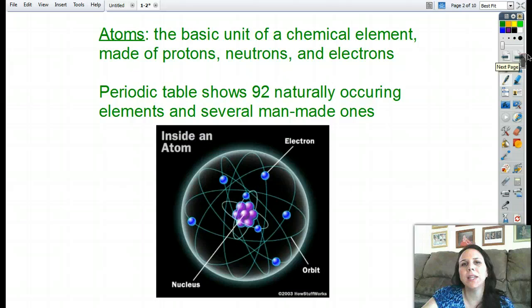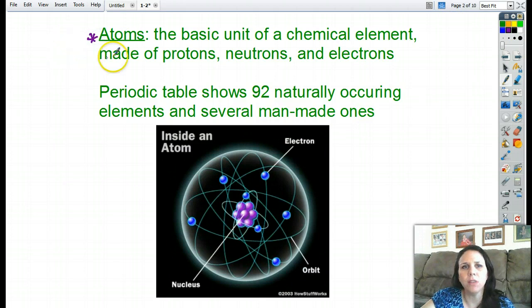So if we break down anything in the world, whether it's alive, or your chair, or the table that you're working at, or the headphones that you're listening to this through, they're all made out of atoms. Atoms are, so here's a definition for you that you need to know, atoms are the basic unit of a chemical element made up of protons, neutrons, and electrons. Now back in eighth grade, you should have had a basic understanding of the structure of an atom.